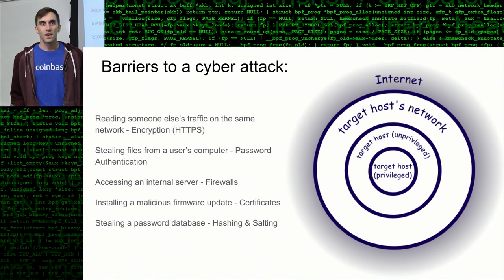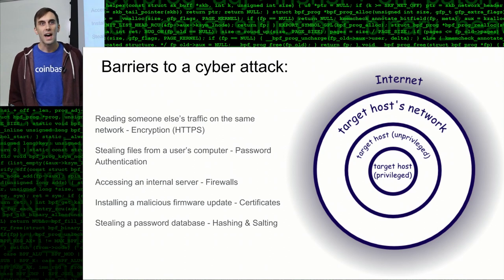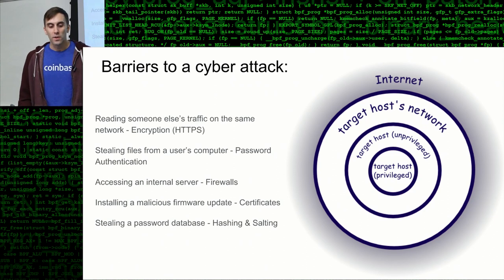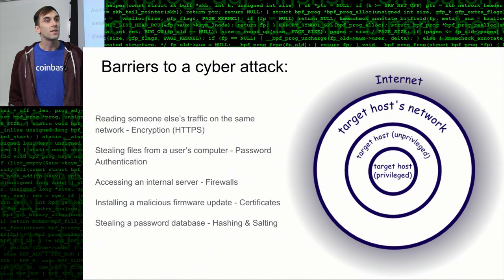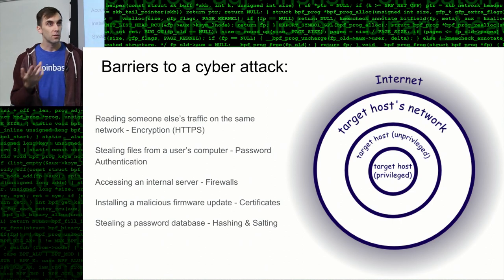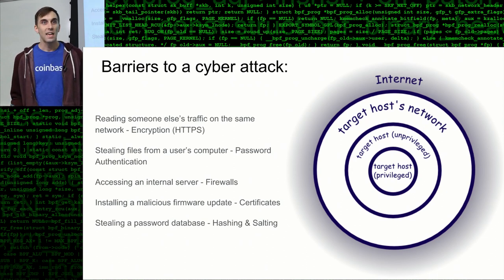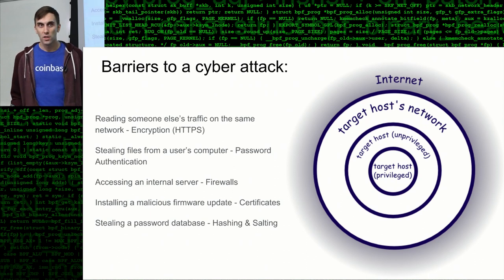There are barriers to a cyber attack in the modern world and most systems will have these features. Most attacks that are effective actually bypass these systems by leveraging human weaknesses. Let's say you want to read someone else's traffic — if you're on the same wireless network and going to a web page with HTTPS implemented, everything's encrypted. Without the encryption key, you can't see the traffic. That's what keeps that person's information private and prevents you from breaking into that system.